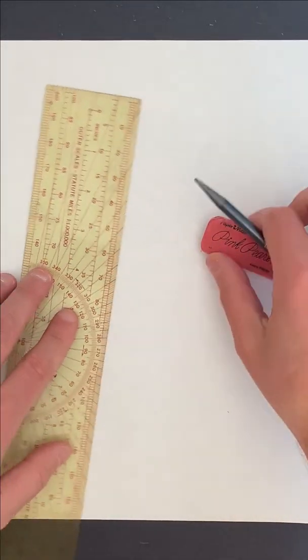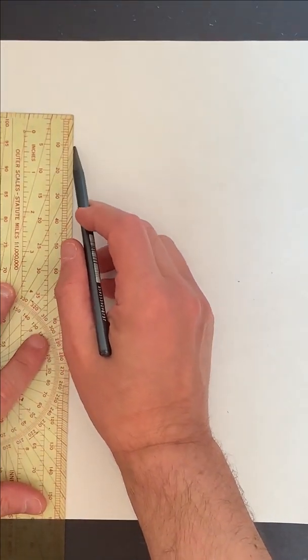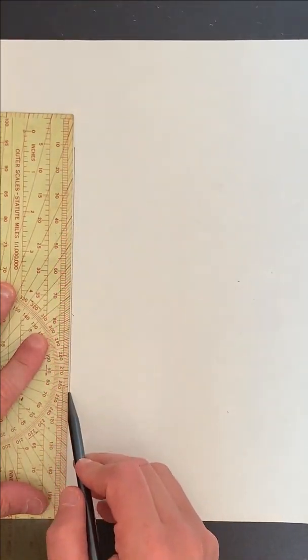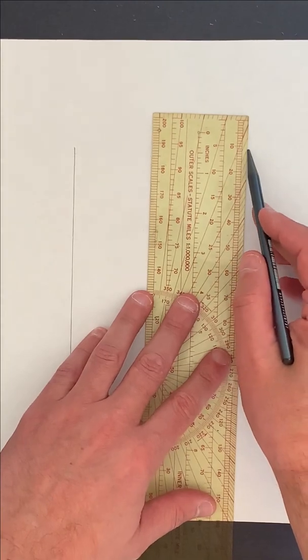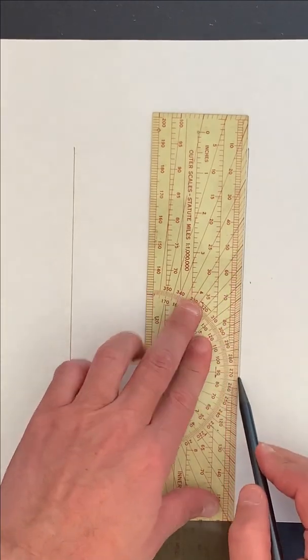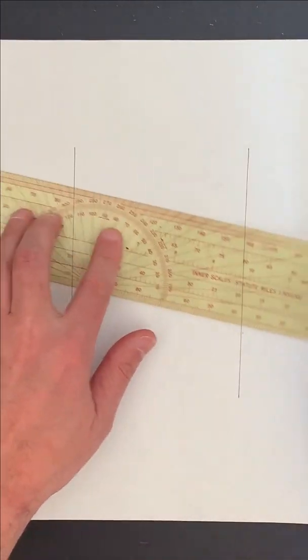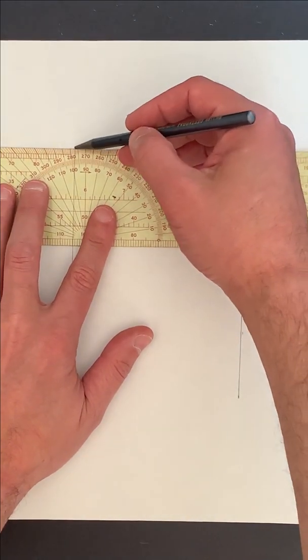So I'm going to start and I'm going to do the two long walls and I'm going to do the two shorter ends.